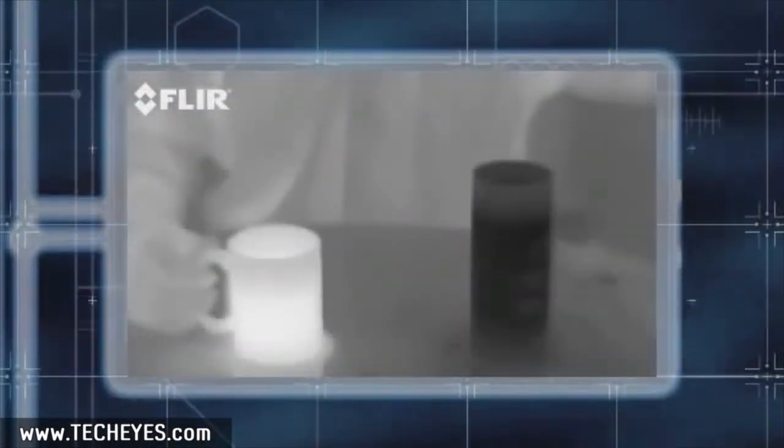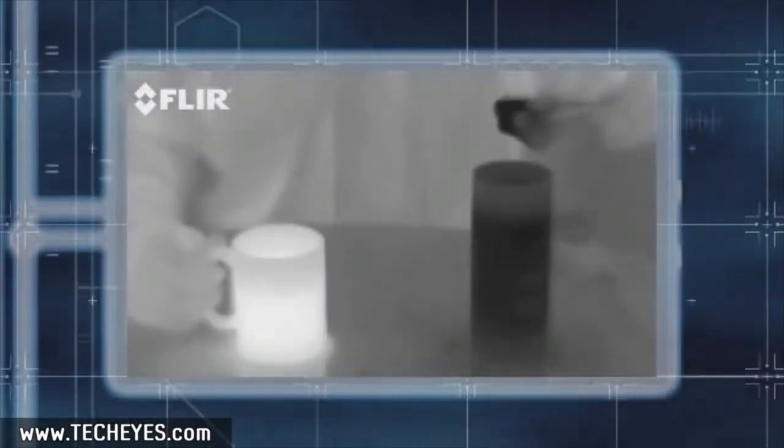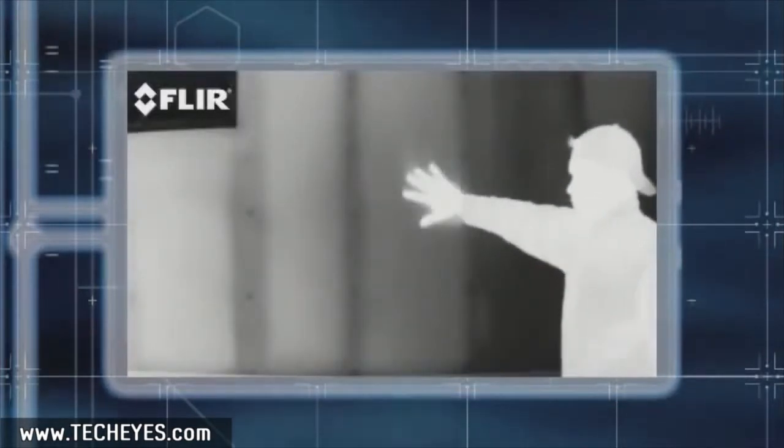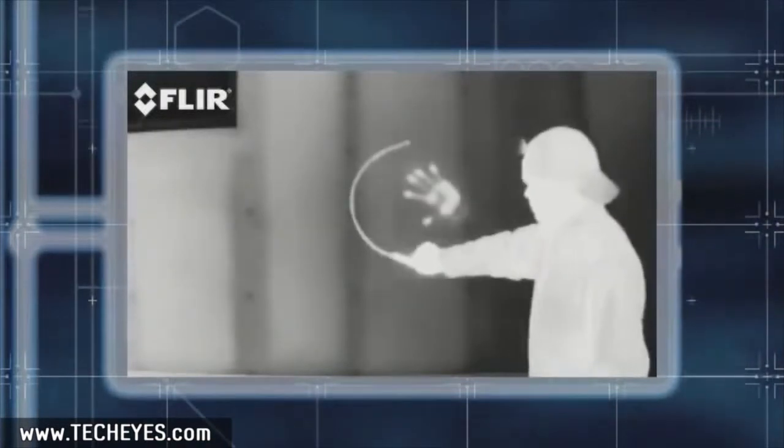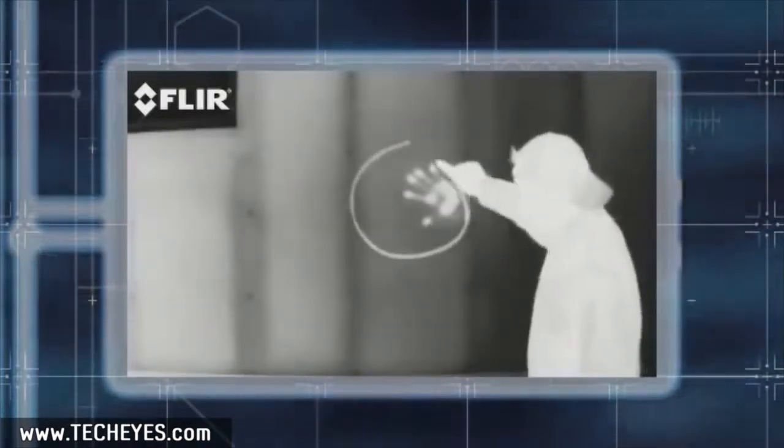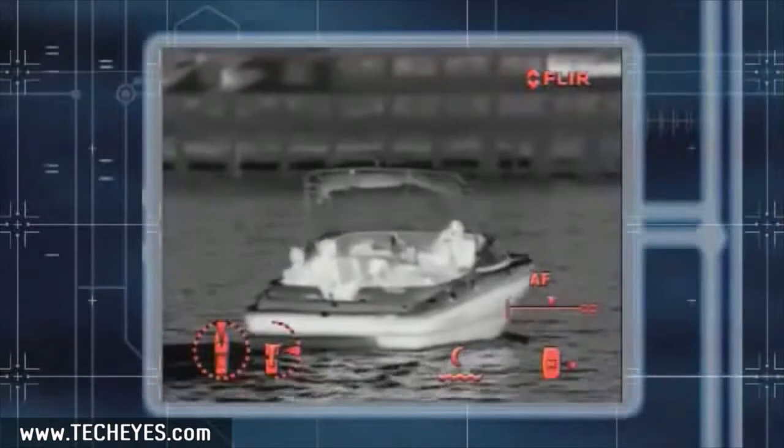Everything around us gives off thermal energy, even ice. The more heat an object emits, the easier it is to see. Thermal images are as easy to understand as watching a black and white television, letting you see details you didn't even know were there.